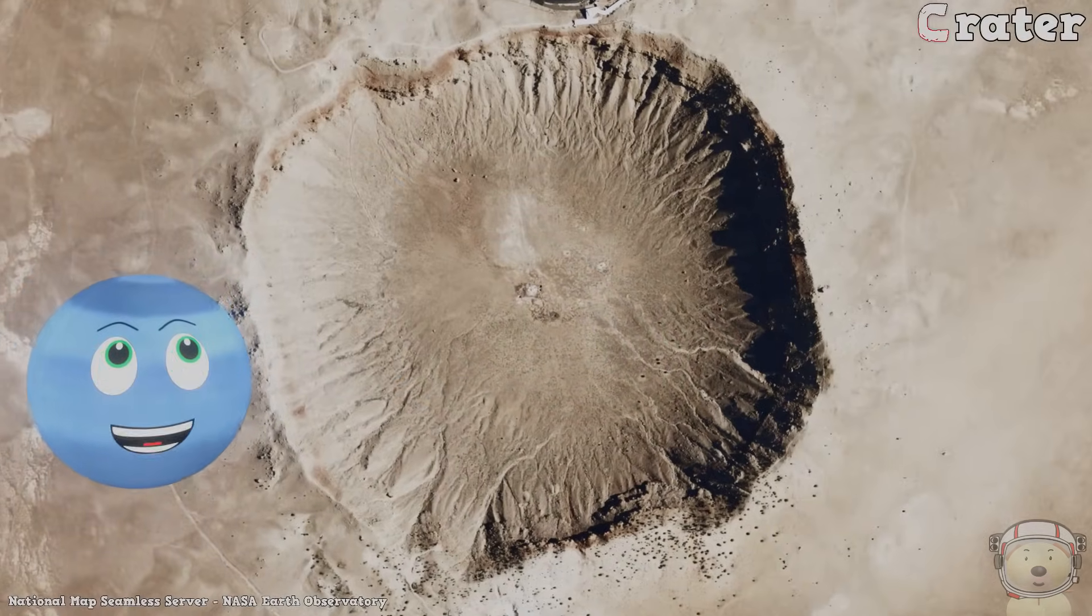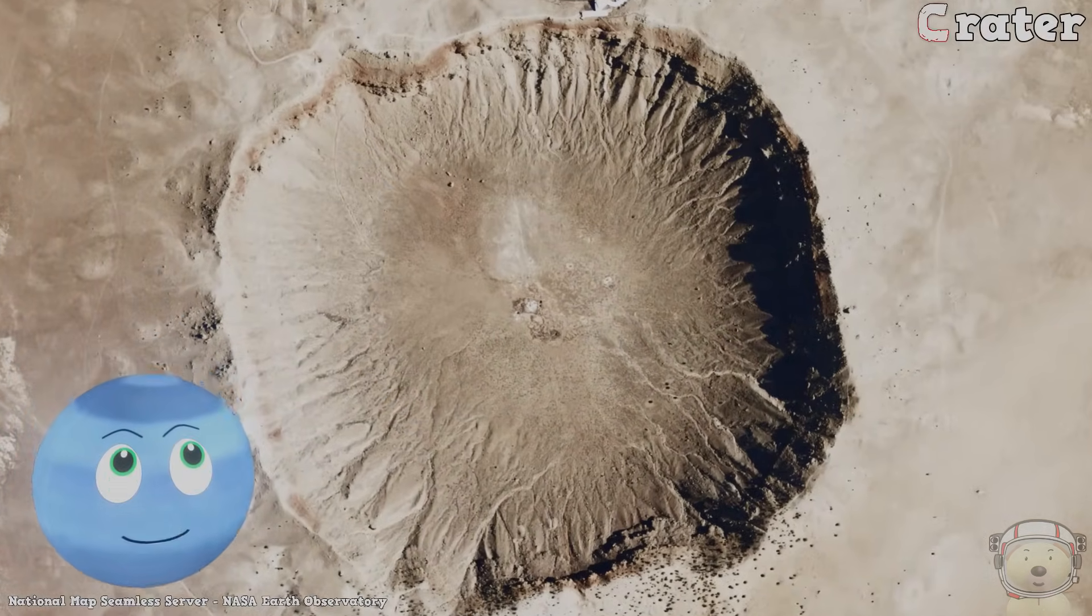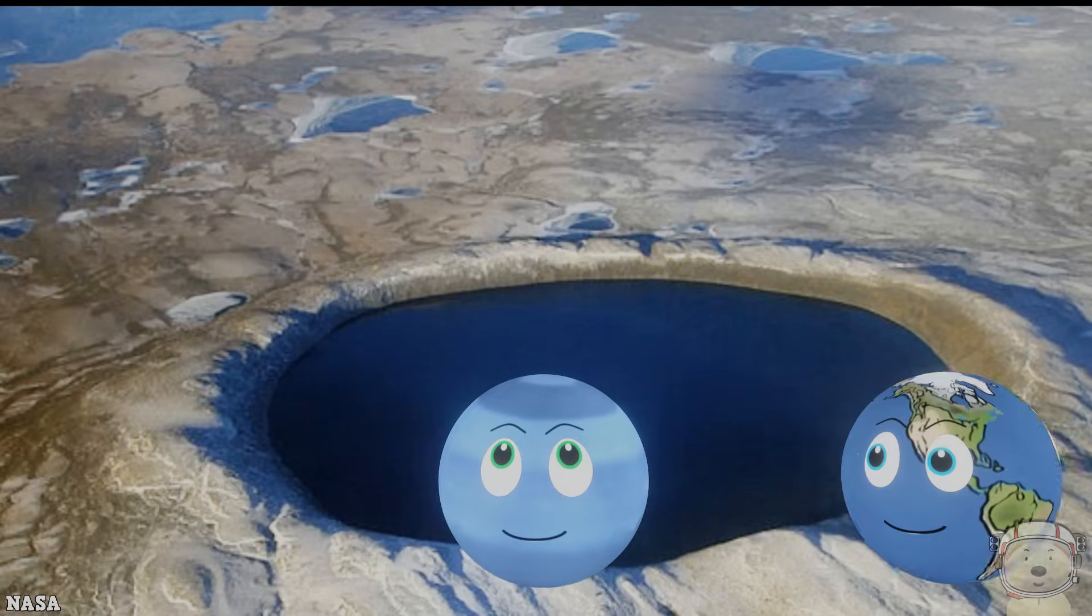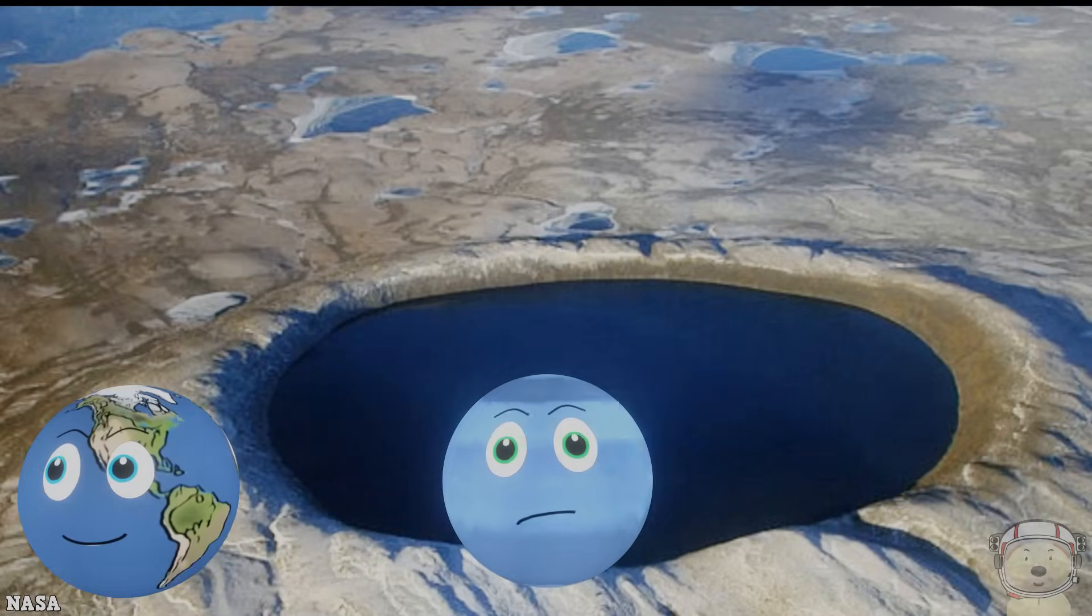C is for crater, a hole in the ground, surface of planets and moons it is found. Coming through. Whoa!